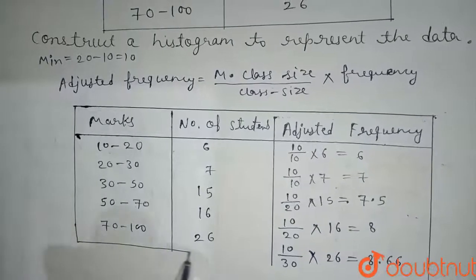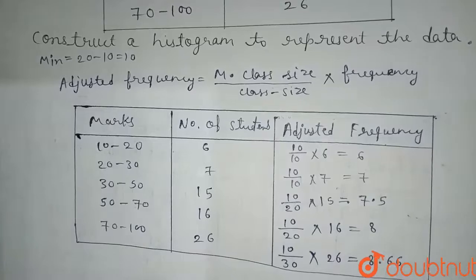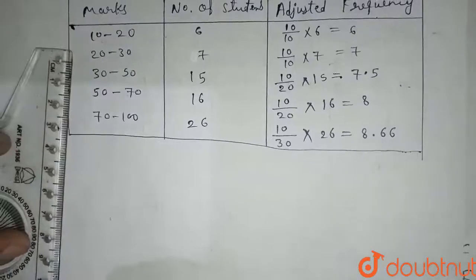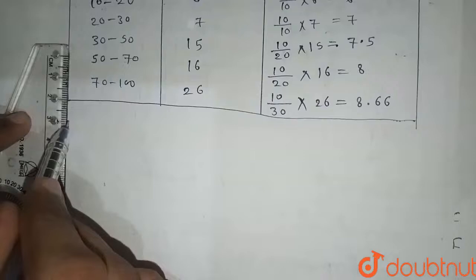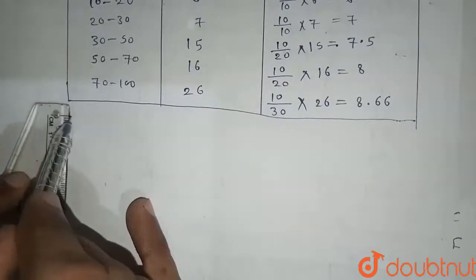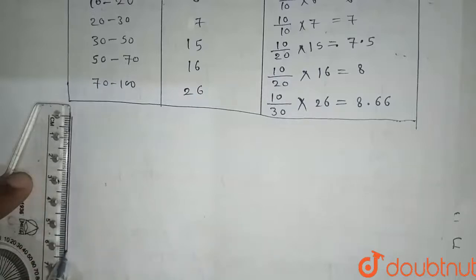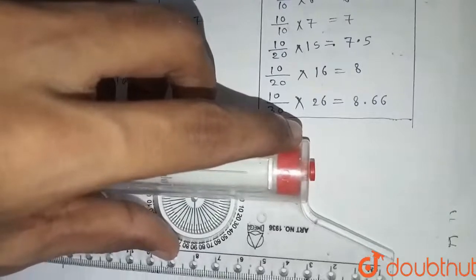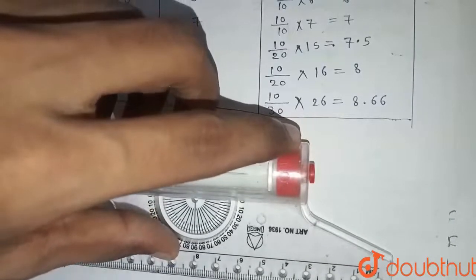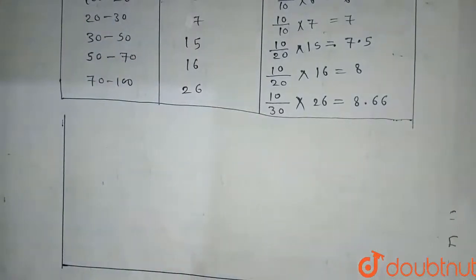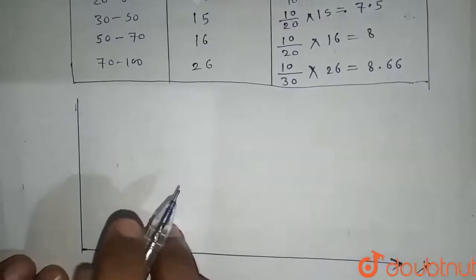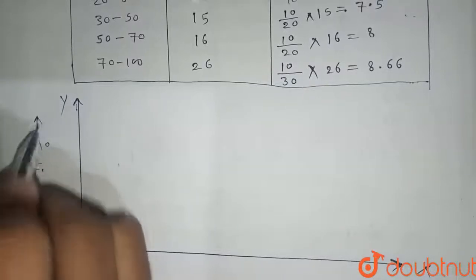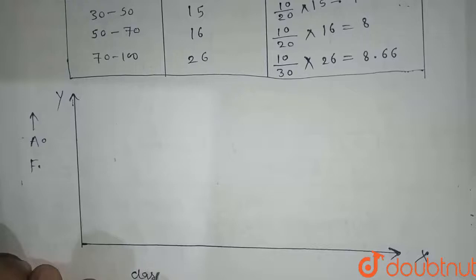Now we'll draw the histogram for this given data. On the y-axis we'll take the adjusted frequency, and on the x-axis we'll take the class limits.